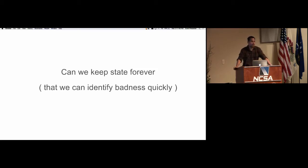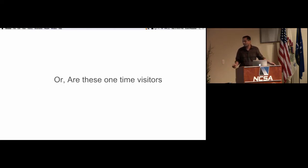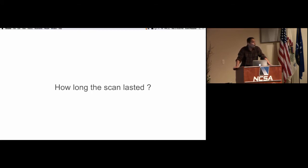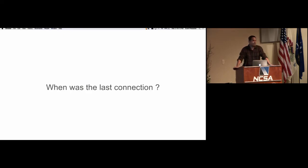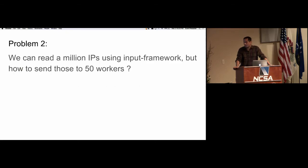Can we actually keep state forever? It would be awesome to know that this IP connected to us on May 5th, 1999 and came back again. The good idea here is that you can identify badness quickly — instead of waiting for it to connect to 20 machines, you can have it connect to one machine and you're done. Are these one-time visitors? Can we find how many local IPs this blacklisted IP touched? Can we know how long the scan lasted — one minute, six minutes? What was the frequency — 10 times a second, or once a day?